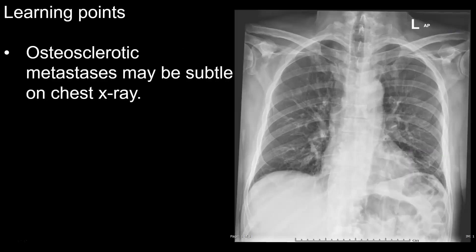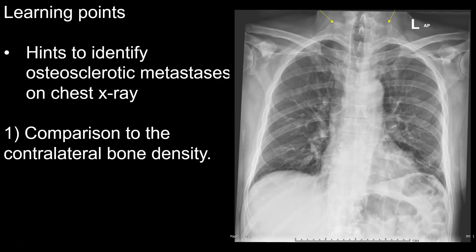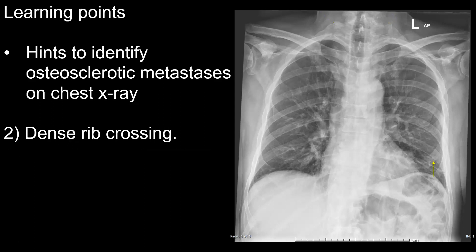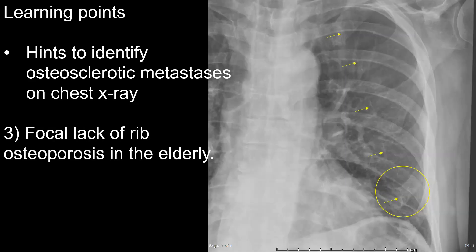We have learned that osteosclerotic metastasis may be subtle on chest X-ray, particularly if you don't have enough clinical data to drive you to search for them — as happened in the present case. The most important hints to make the diagnosis are: first, comparison to the contralateral bone density; second, the dense rib crossing sign; and third, the focal lack of rib osteoporosis in the elderly.